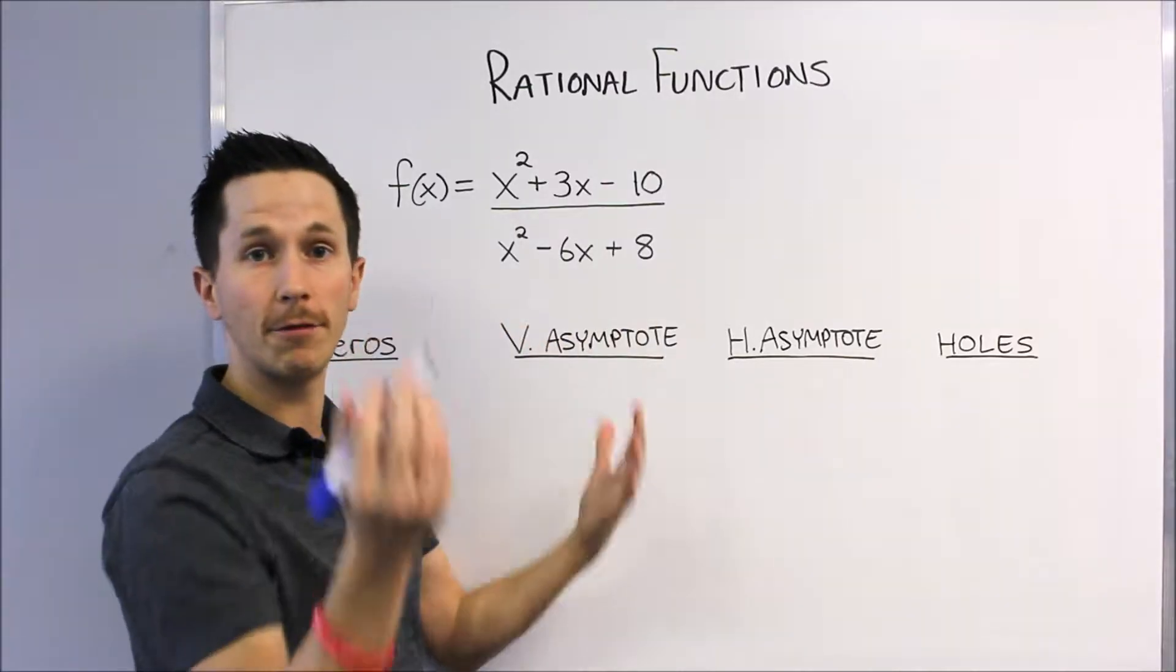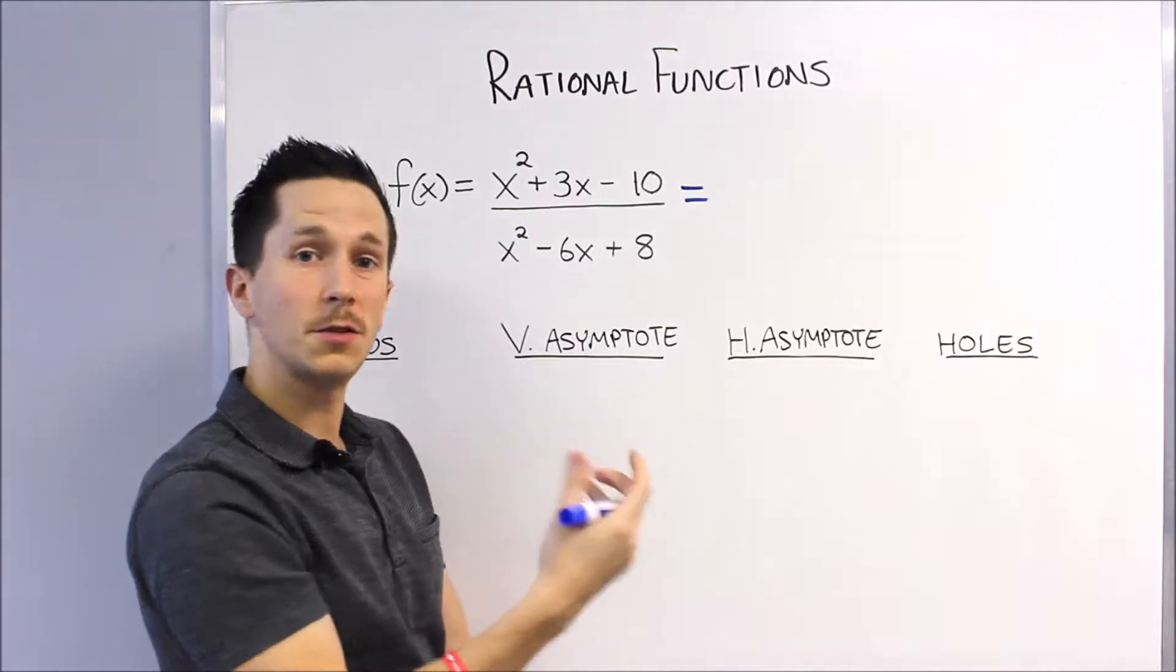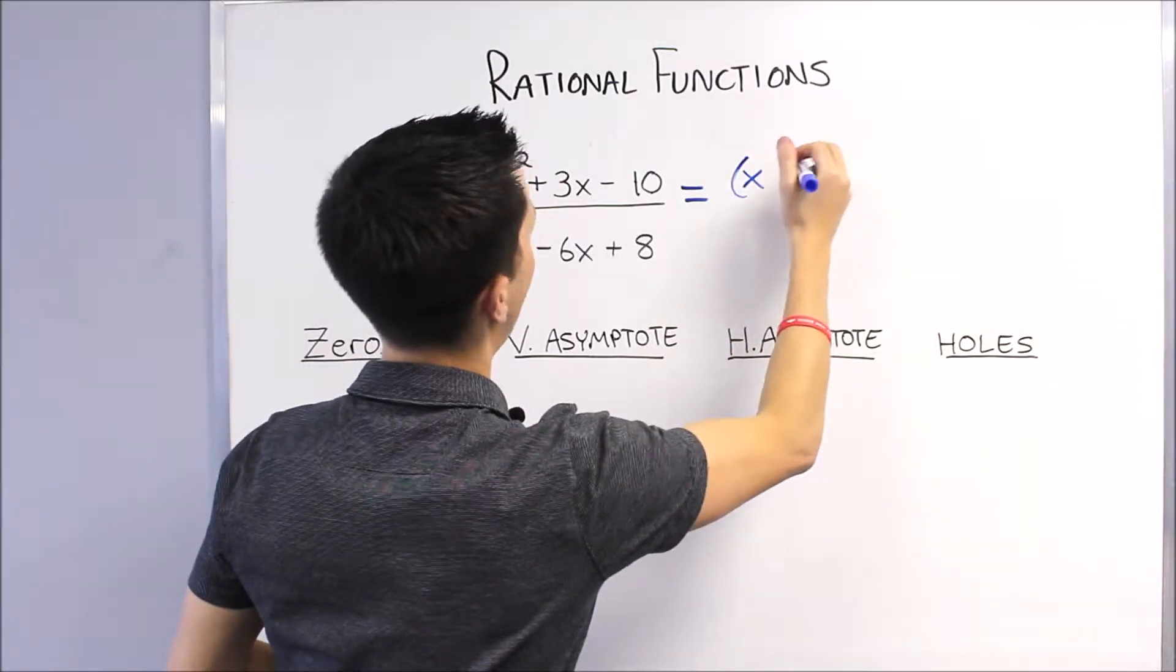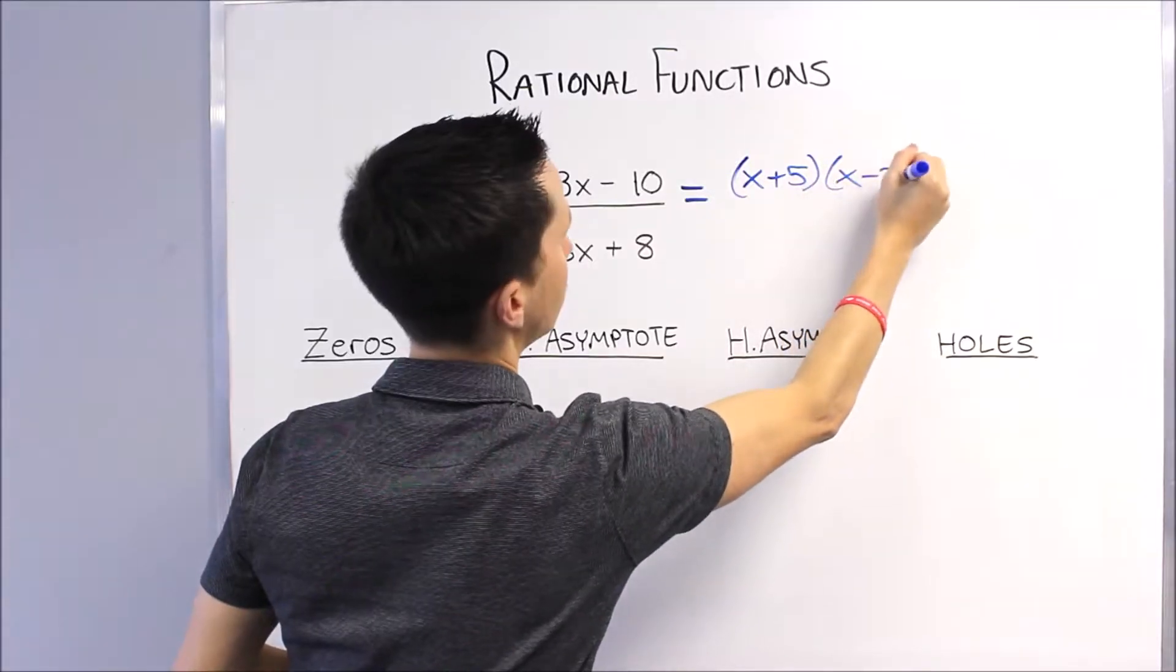So the first thing I'm going to do is factor everything in sight, top and bottom. These are quadratics, which makes it really nice because we're really good at factoring quadratics. This is (x + 5)(x - 2).